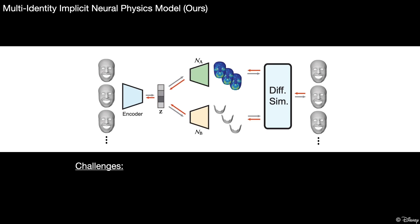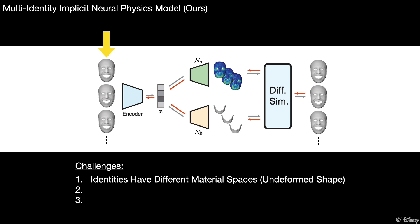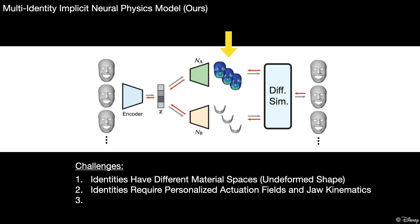In doing this, however, we are faced with three main challenges. Firstly, each individual face is unique — they differ in shape. Naively learning actuations in different material spaces makes it hard for the network to identify meaningful muscle structures that can be shared across identities. Secondly, each person has unique ways of making expressions, requiring customized actuation fields and gel movements.